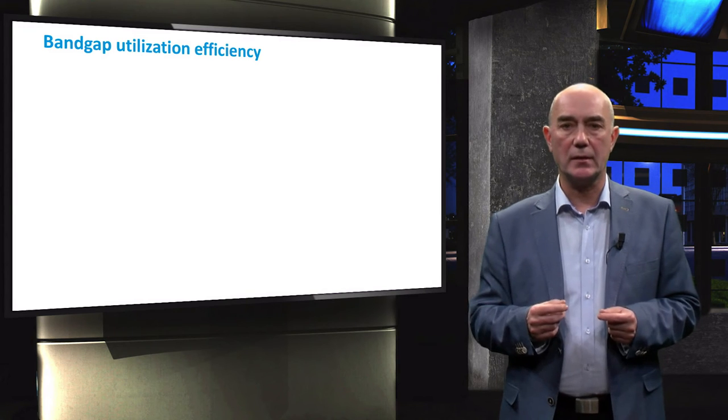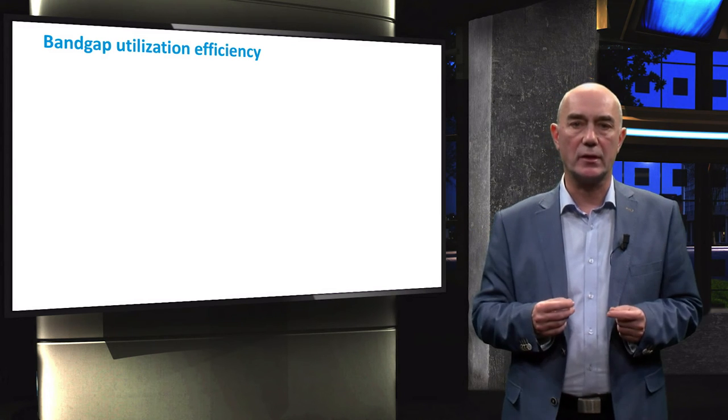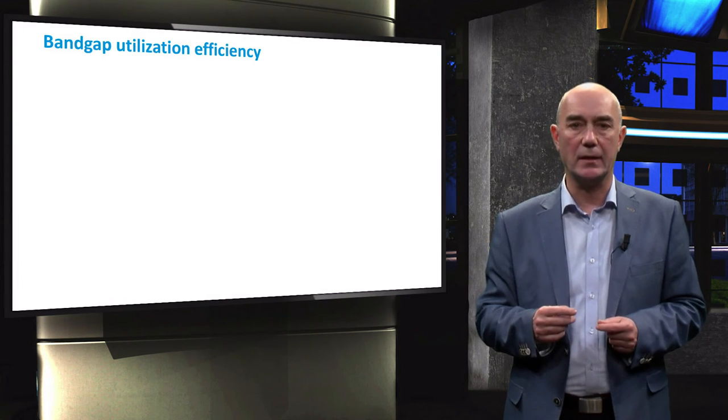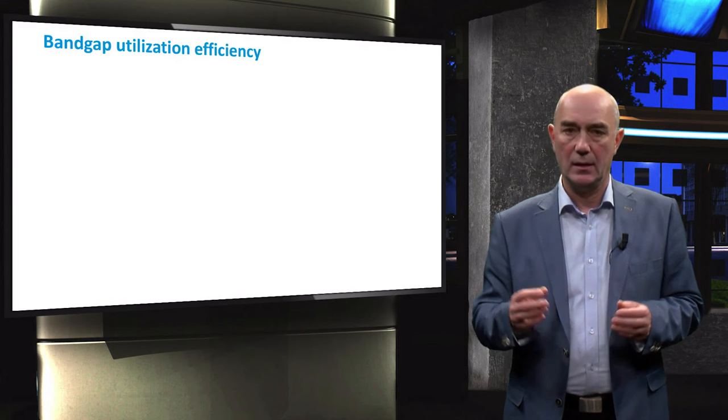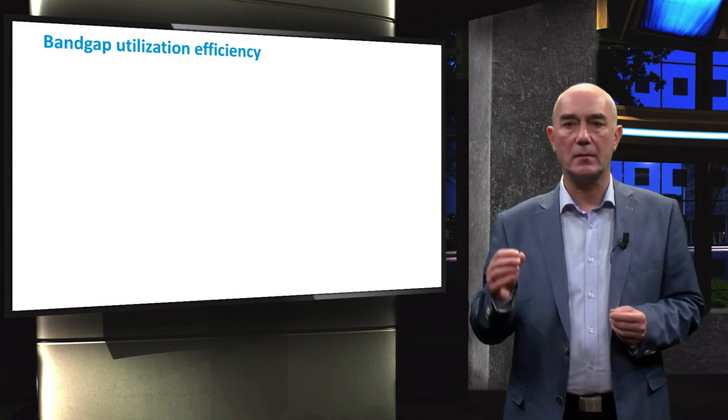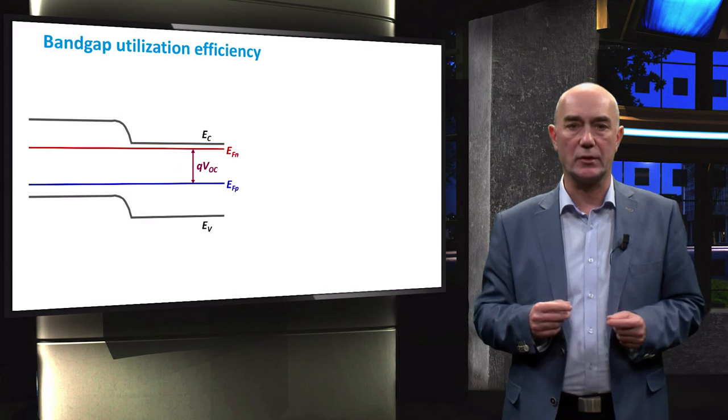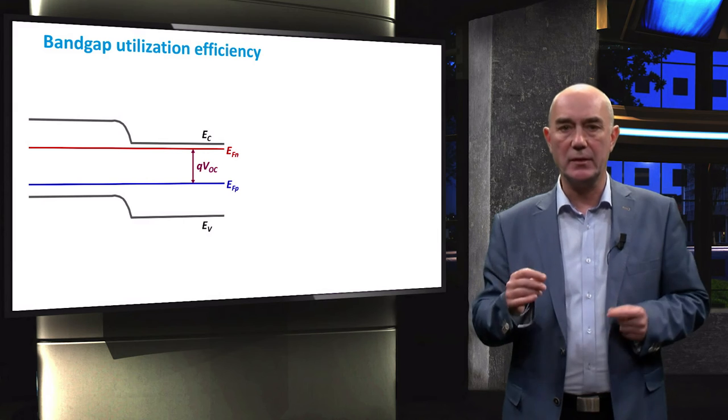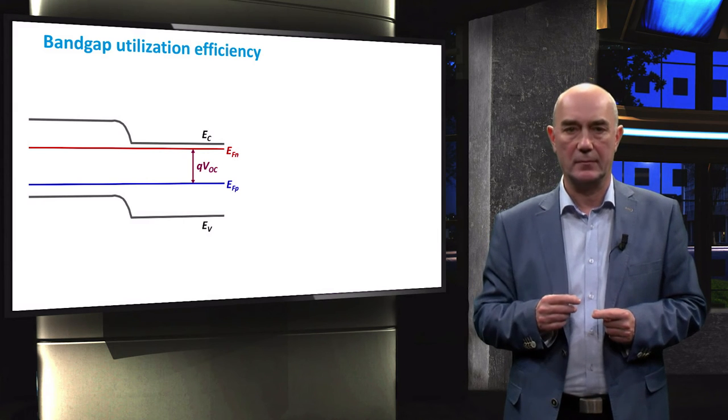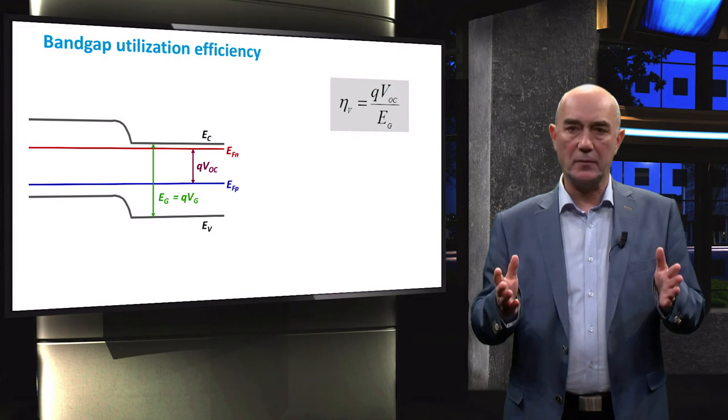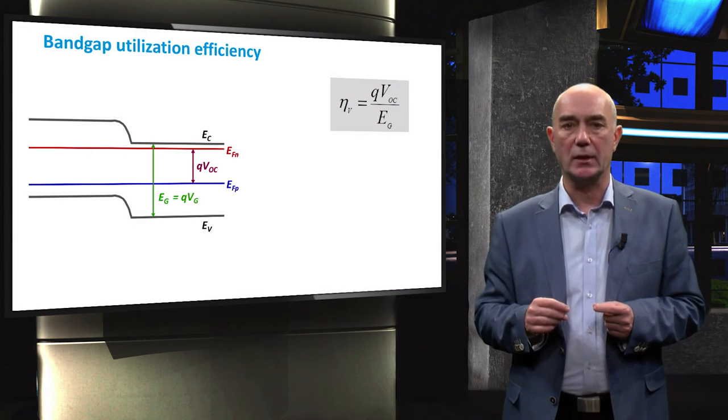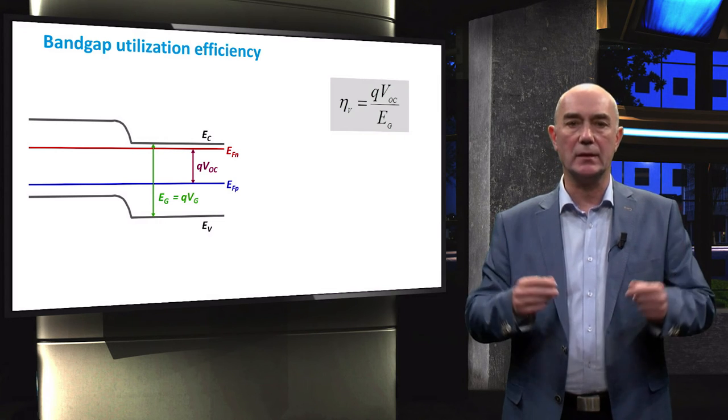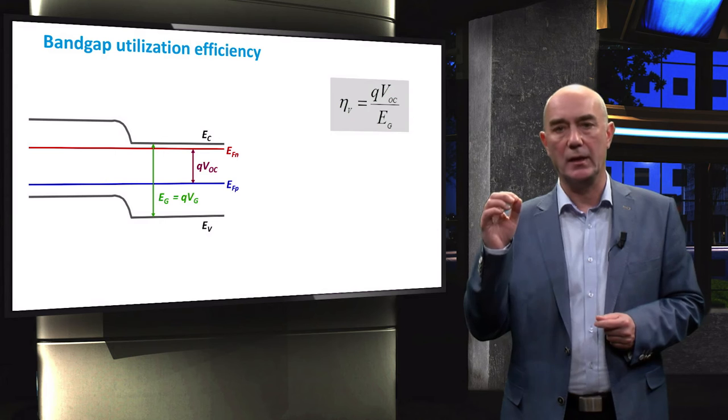In practical solar cells, even under large concentration of light, the splitting of the quasi Fermi levels does not match the band gap energy of an absorber layer. You can visualize this by looking at the band diagram of a P-N junction solar cell. The splitting of the quasi Fermi levels determines the open circuit voltage VOC. The fraction of the band gap energy that corresponds to the energy related to the open circuit voltage is defined as the band gap utilization efficiency or eta V.